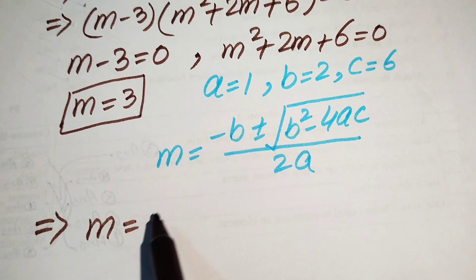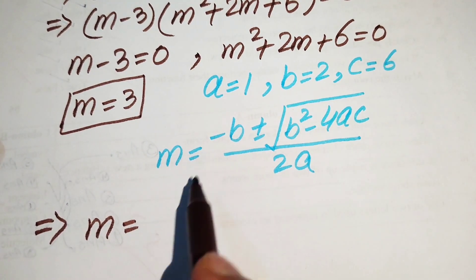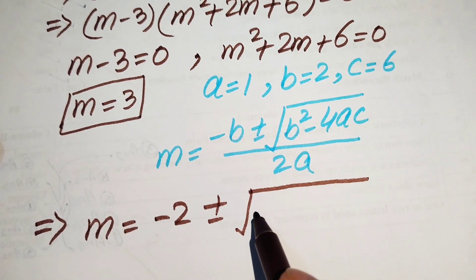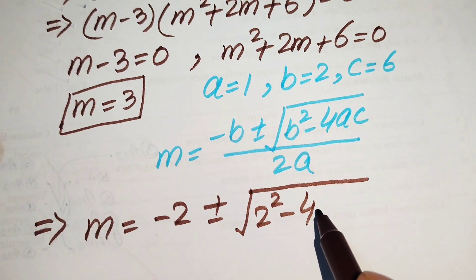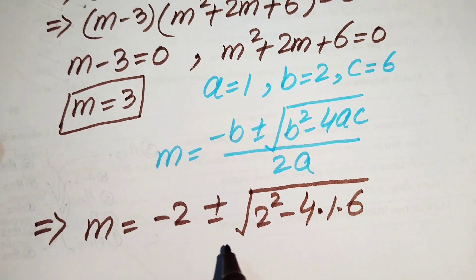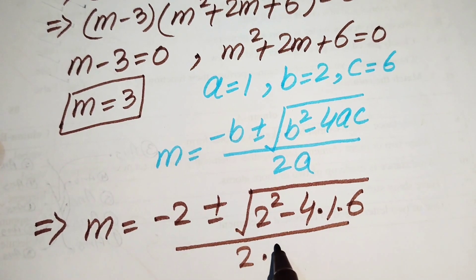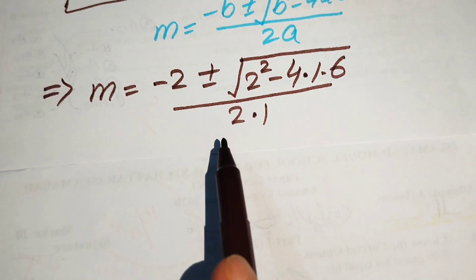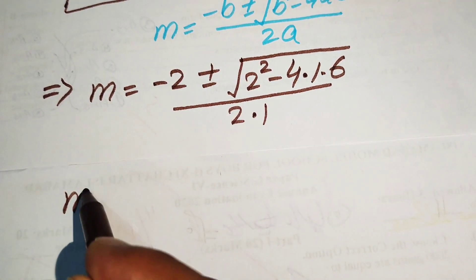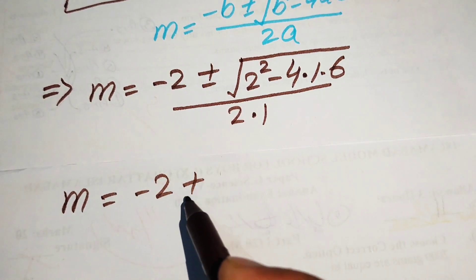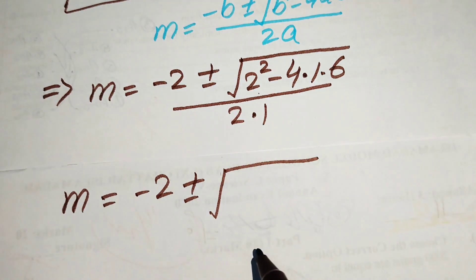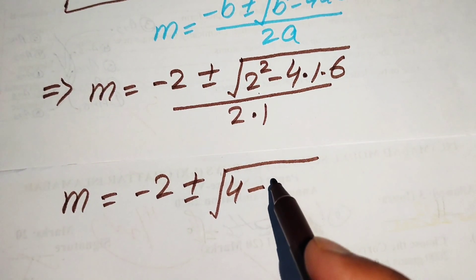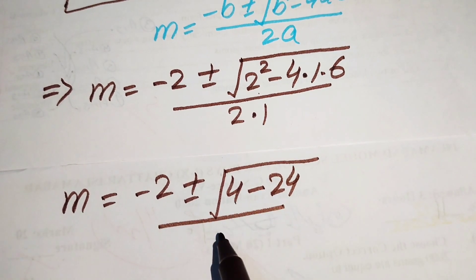Substituting the values: b is 2, so we have minus 2 plus or minus square root of 2 squared minus 4 times 1 times 6, all divided by 2 times 1. Simplifying, 2 squared equals 4 and 4 times 6 equals 24, giving us minus 2 plus or minus square root of 4 minus 24, divided by 2.